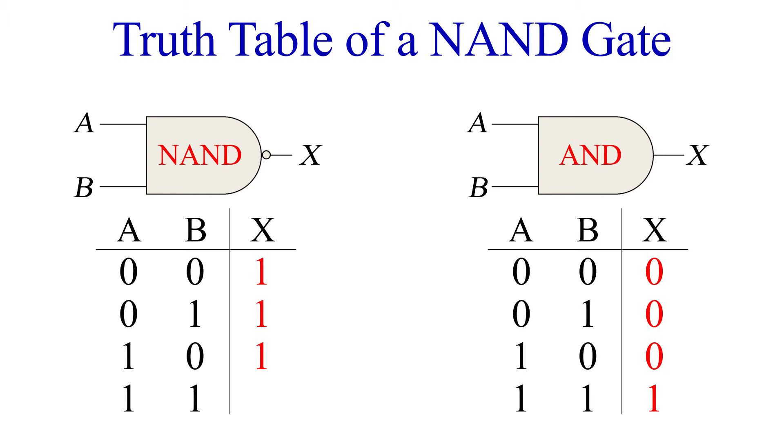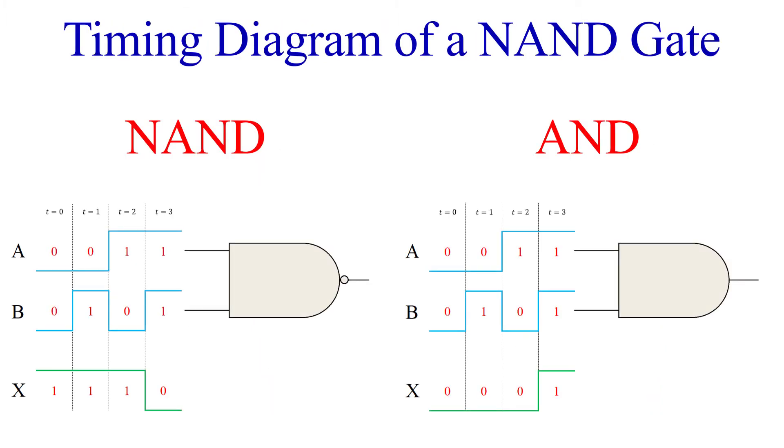Now for the timing diagram. Let's again look at the NAND along with the AND. Looking at just the two output waveforms, I think we get a better sense of how these two gates are inverses of one another. The two waveforms mirror one another perfectly.